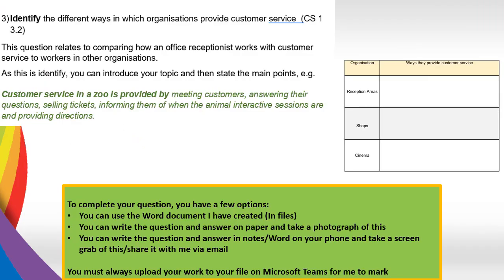Question three asks you to identify the different ways in which organisations provide customer service — comparing how an office receptionist works with customer service in other organisations. Because it's identifying, introduce your topic and give the main points. For example: 'Customer service in a zoo is provided by meeting customers, answering their questions, selling tickets, informing them of animal interactive sessions, and providing directions.' Use that structure but change the organisation — a shop, a cinema, and so on.